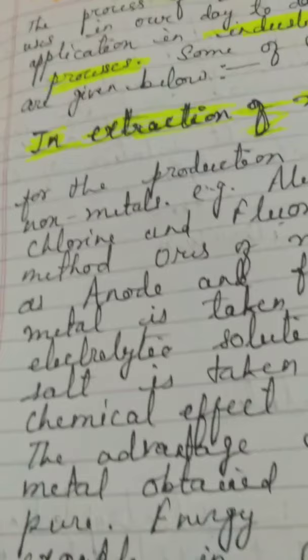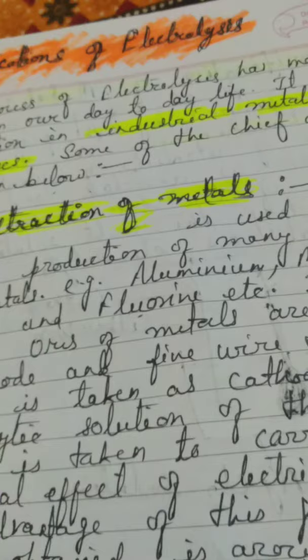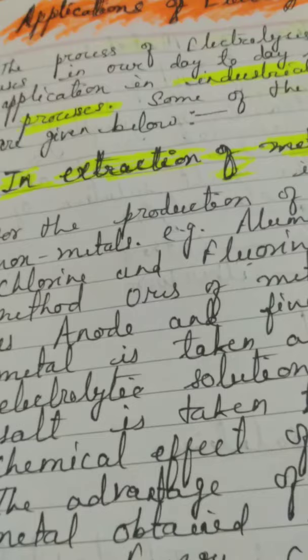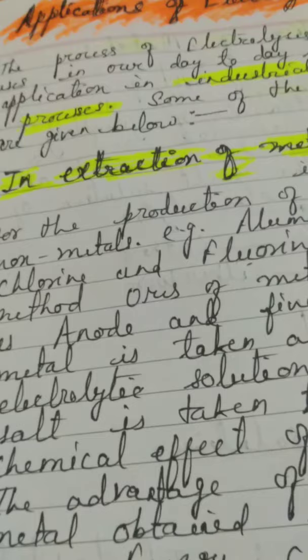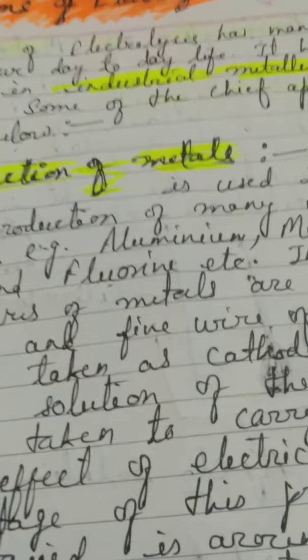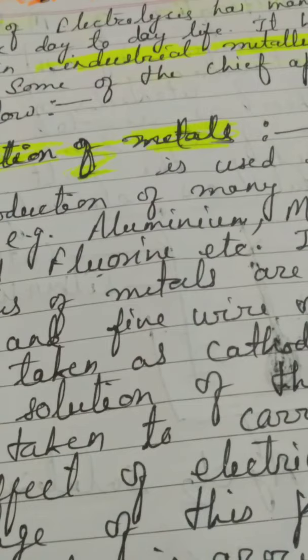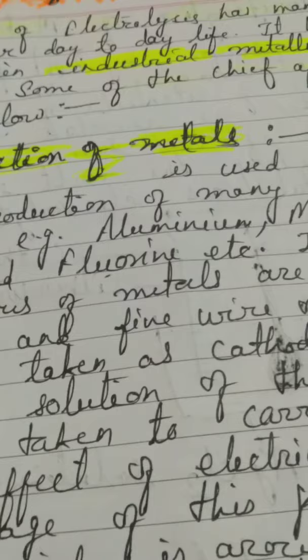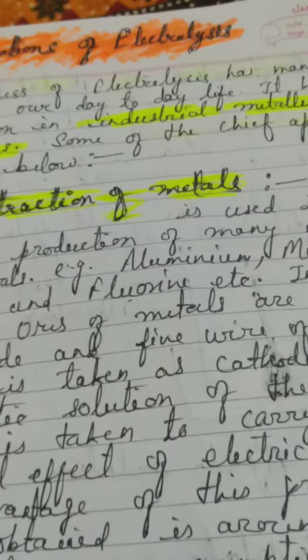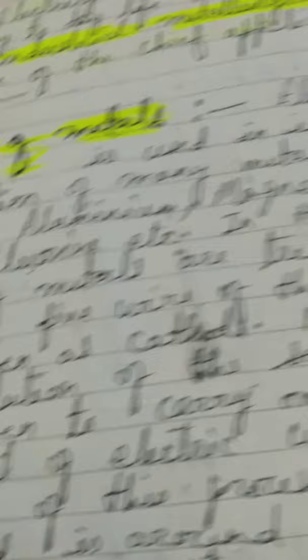Let us start with the first application in the metallurgical industry: the extraction of metal. Extraction means to remove some stuff. Metal is not available in the pure state in our surroundings — it is always available with some impurities, in the form of ores. In the ore, one metal is present in a very dominant way, and that metal is extracted. This process is called extraction of metal.